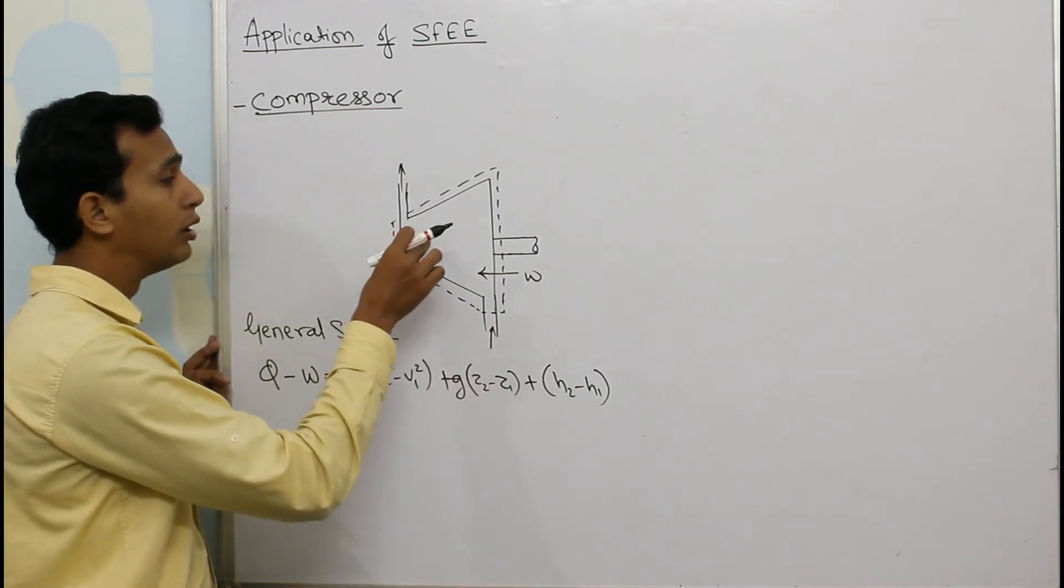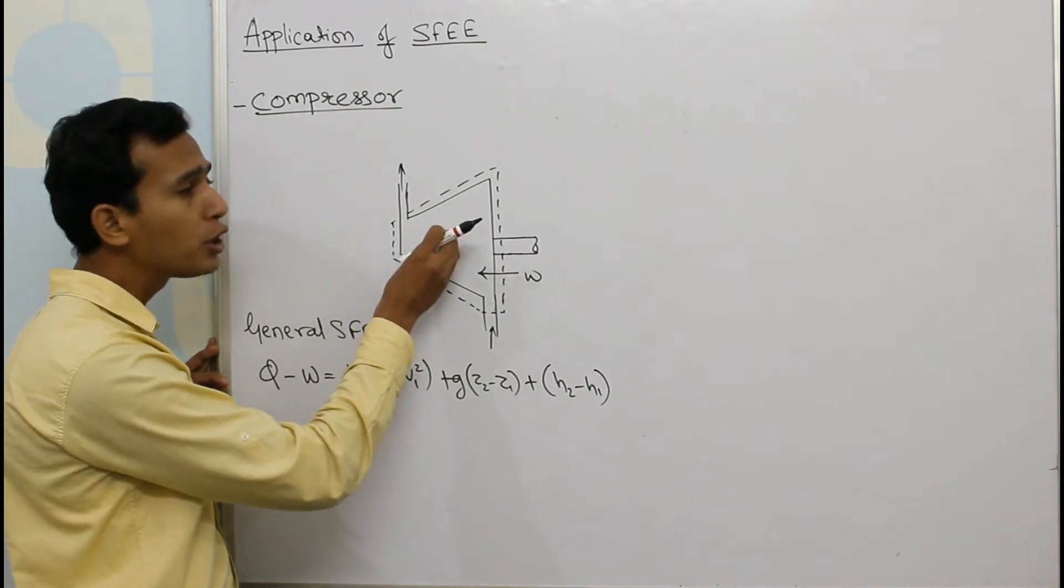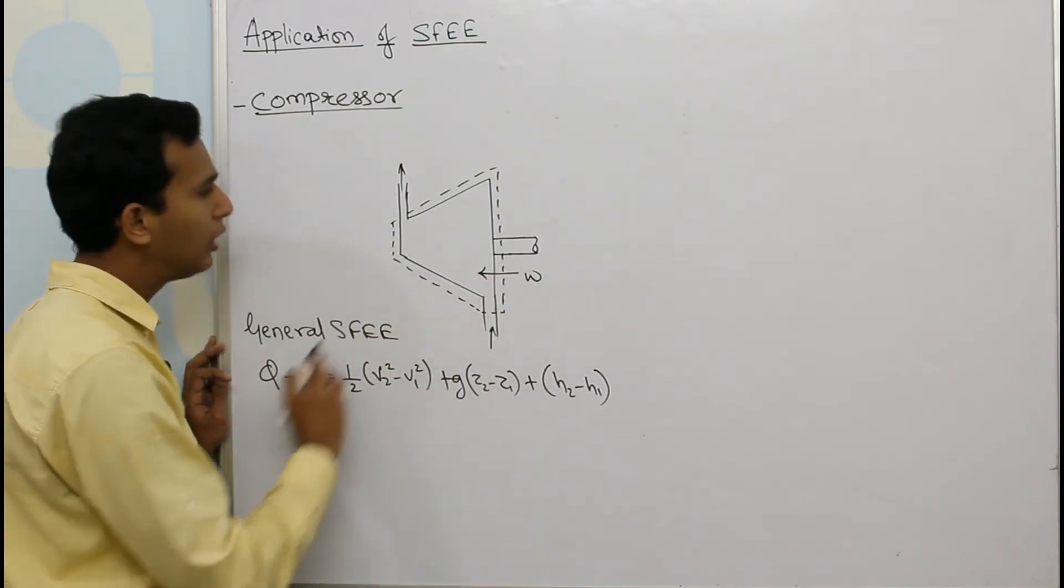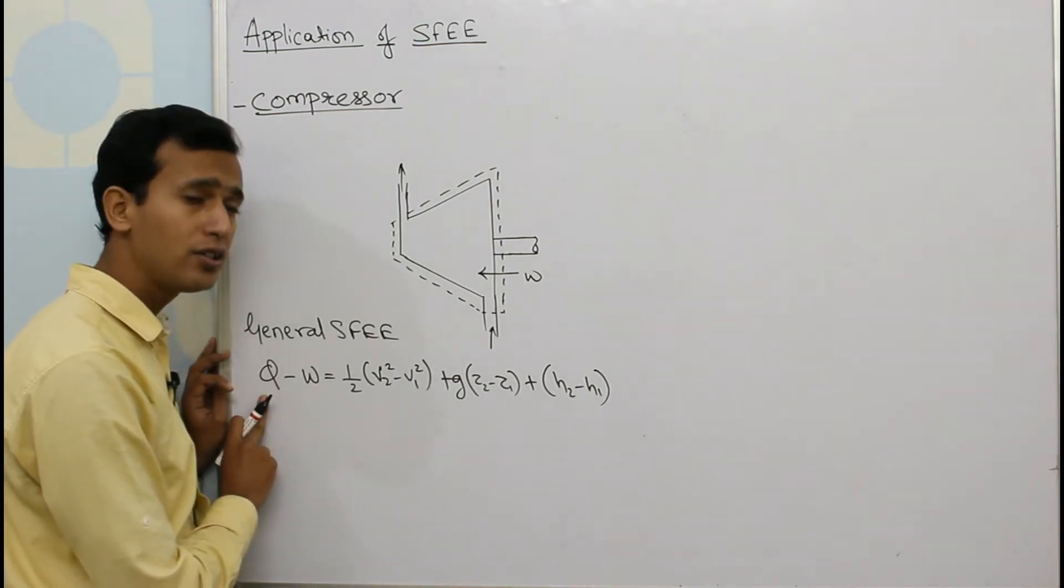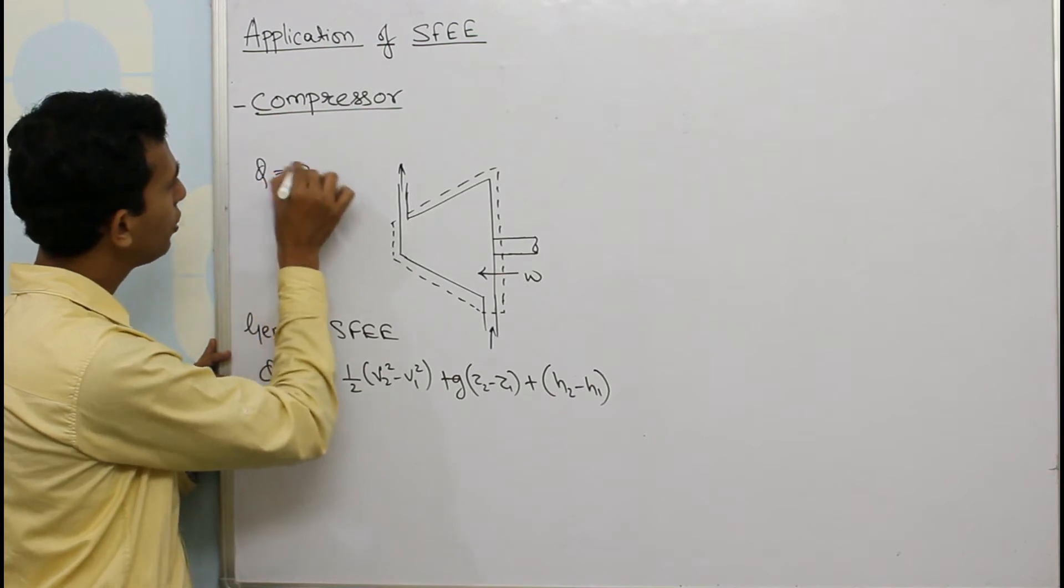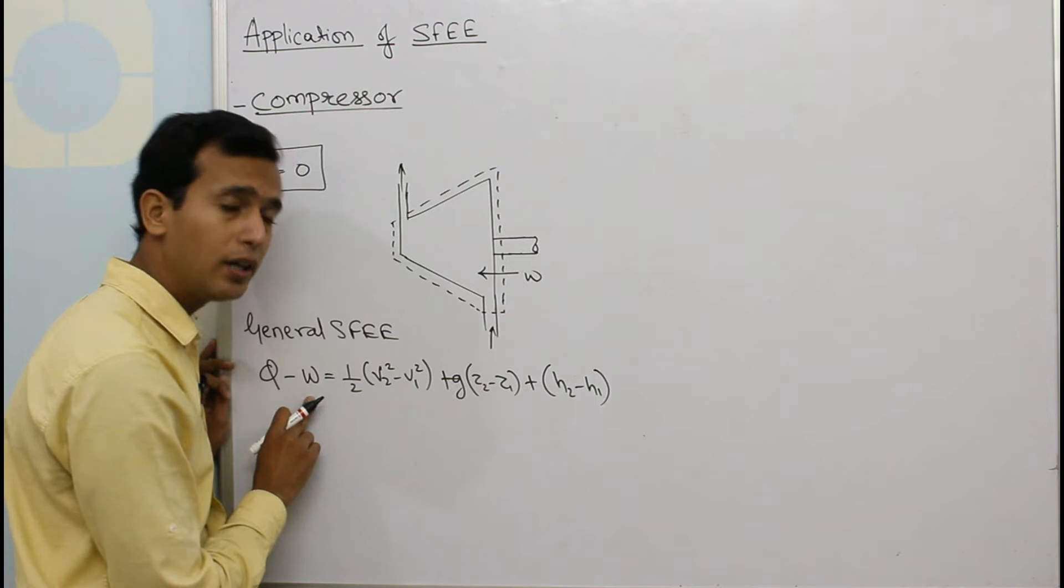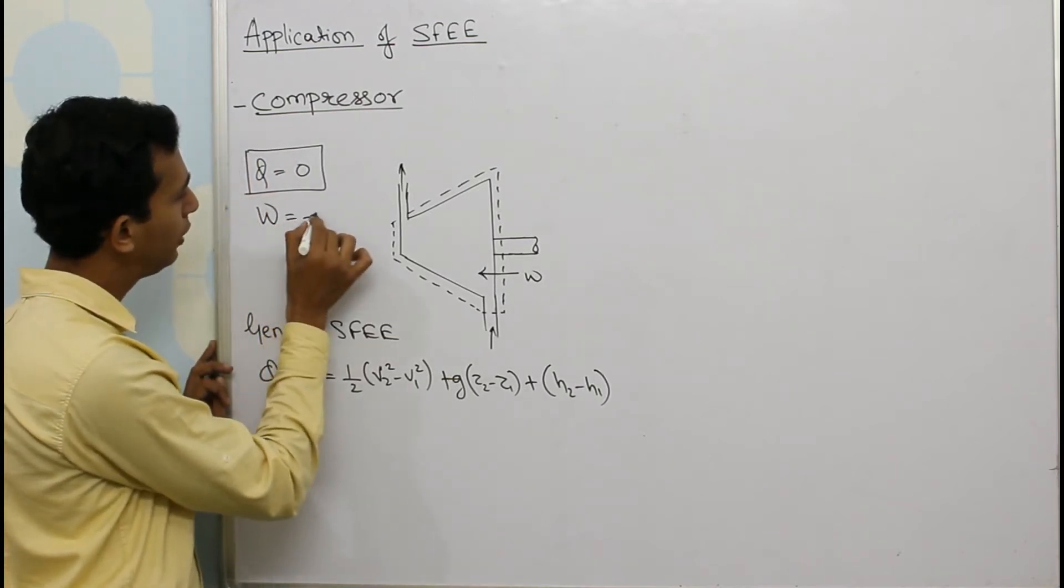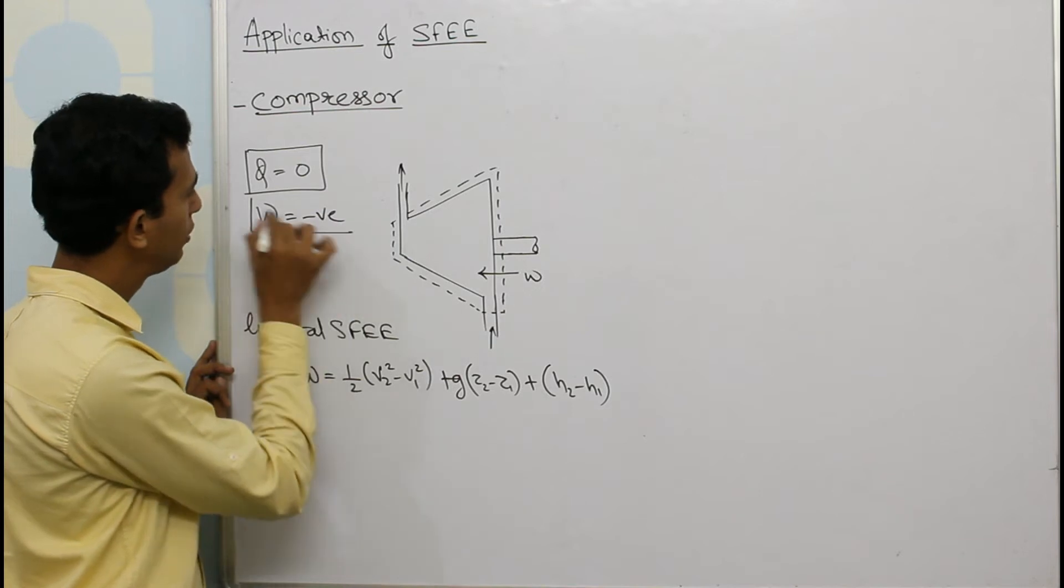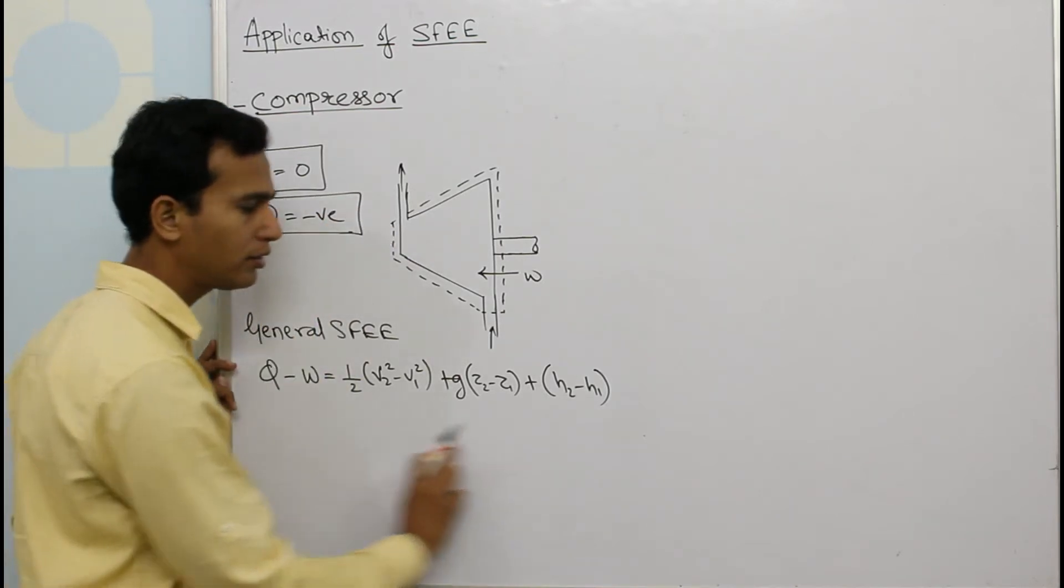Now let us try to understand which terms are going to be there for the device compressor in order to obtain a different energy equation for the same. Here heat is neither supplied to a compressor nor is it being rejected, so heat interaction is zero. First thing: work is supplied. Whenever work is supplied we take it negative, so W is negative.